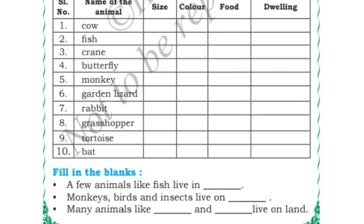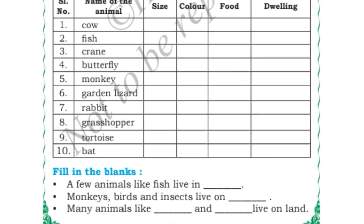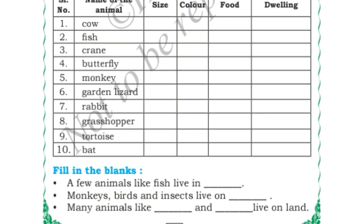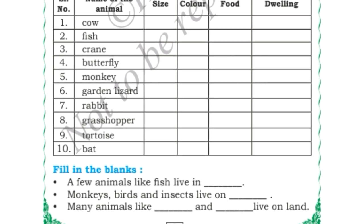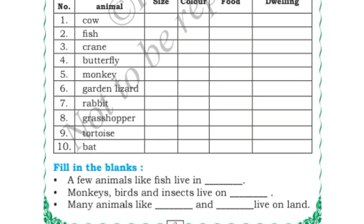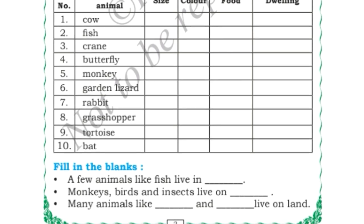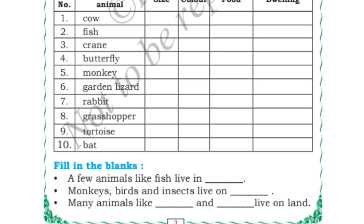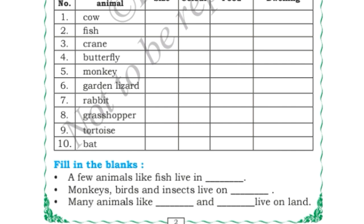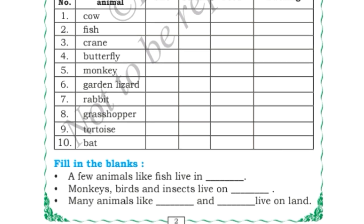Monkey: size is small, colour is brown, food is fruits and vegetables, and also insects — because monkey is omnivorous, it eats both herbs and flesh — and it lives in the forest. Like that you can write for garden lizard, rabbit, grasshopper, tortoise, and bats: their sizes, colours, what they eat, and where they live.